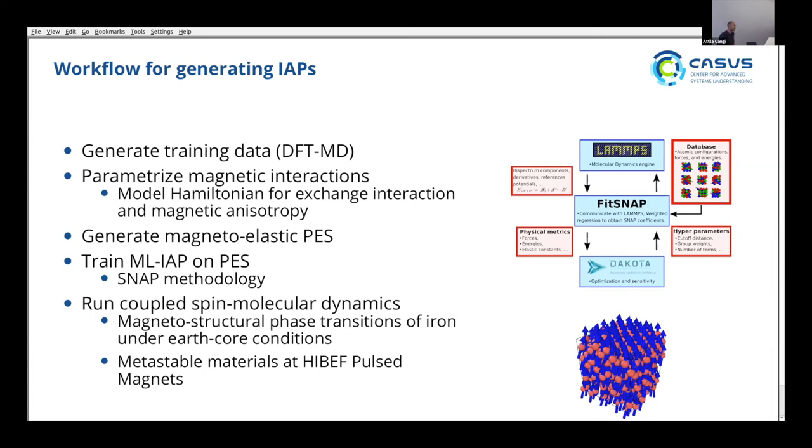But as you include more of these correlations, the method becomes more costly and then it's not attractive anymore. So basically under ambient conditions what has been shown by the LAMMPS team is that the FITSNAP methodology achieves DFT accuracy. What hasn't been shown is what happens under higher temperature and higher pressure conditions and this is what we're trying to do here.